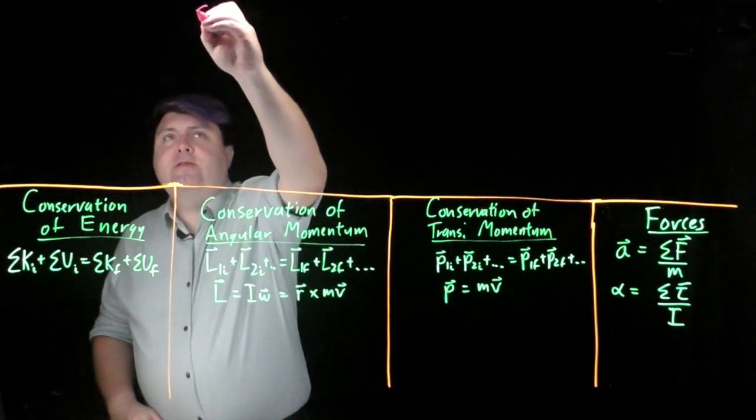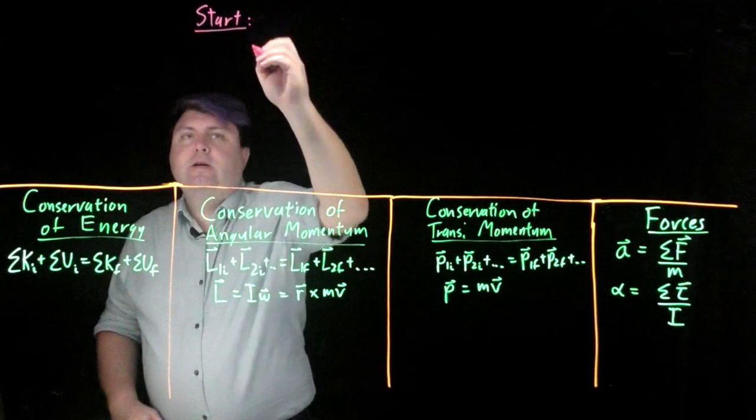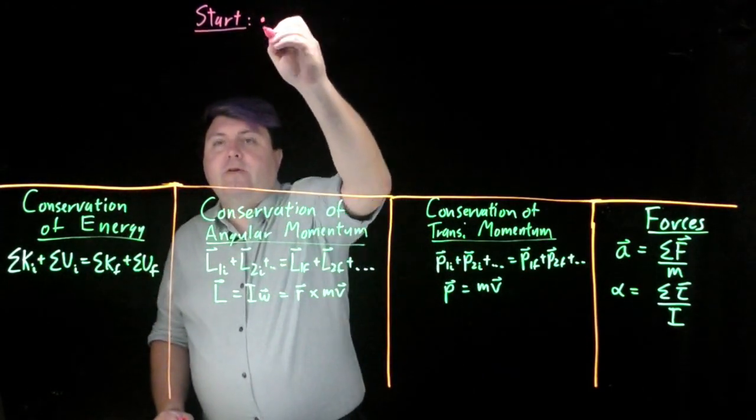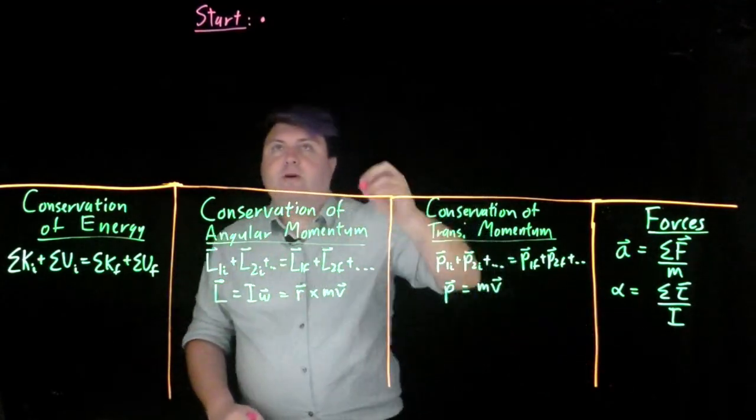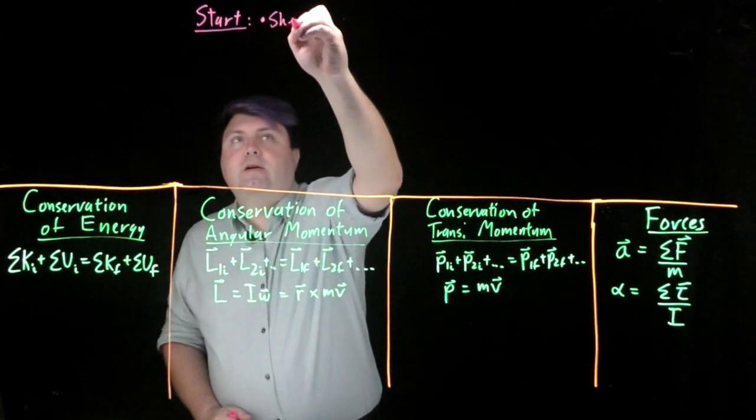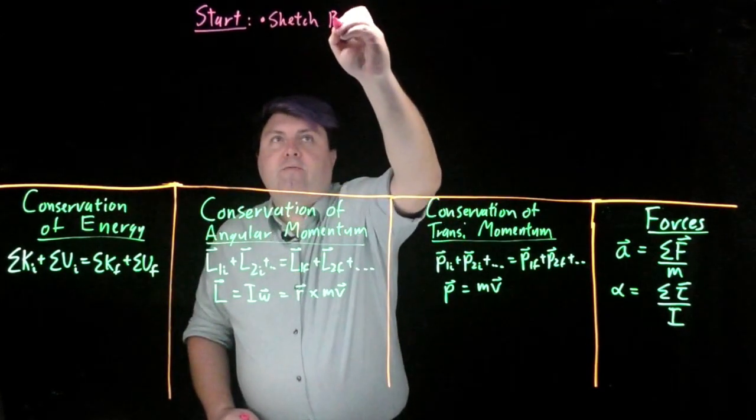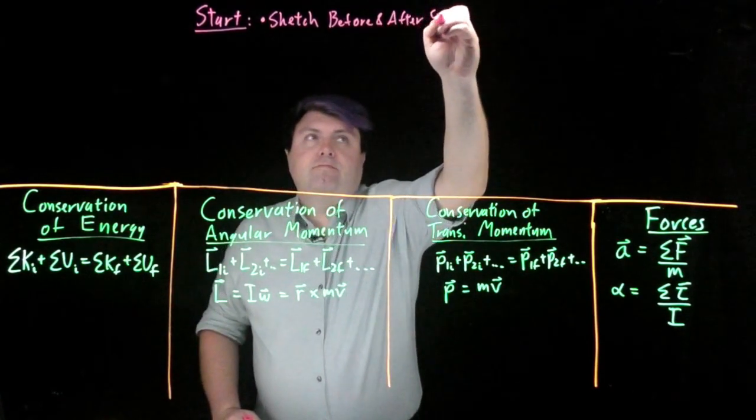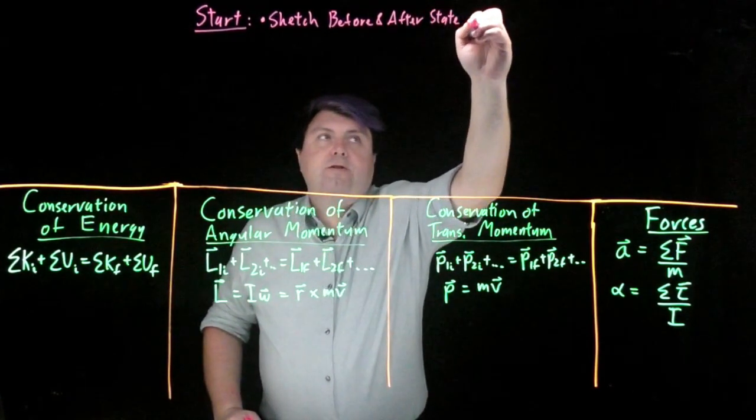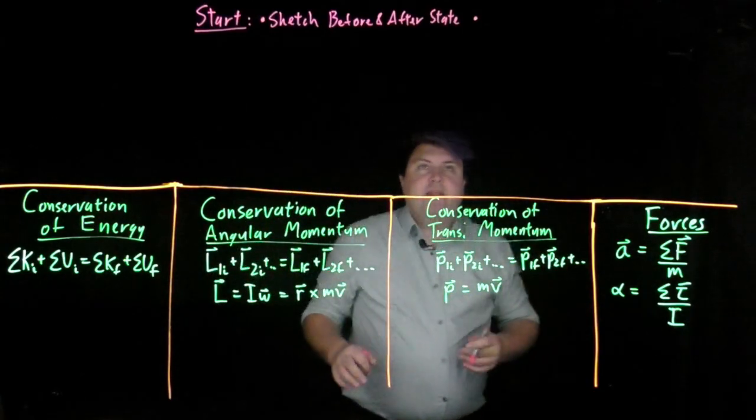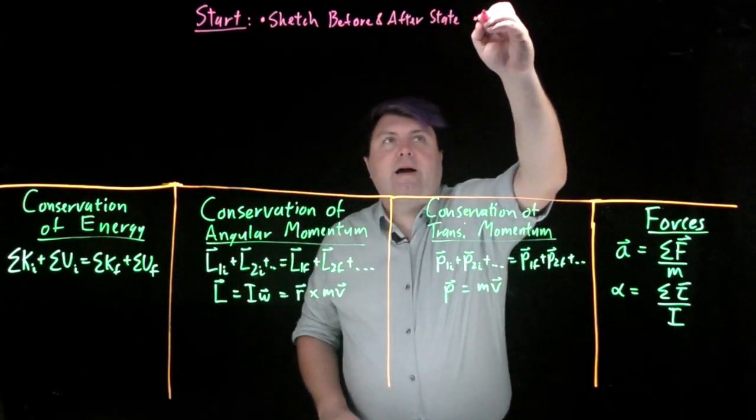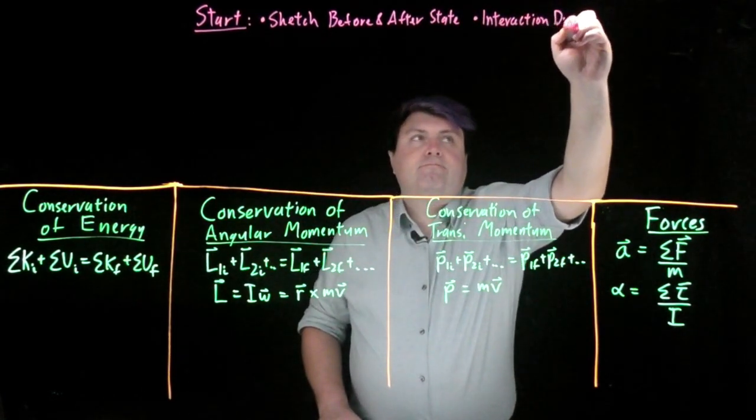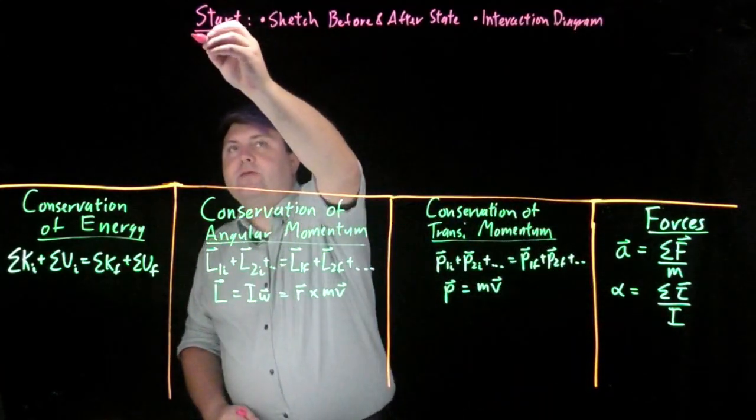So we're going to have a start. And up at this start, what we want you to do is we want you to do all the steps that you normally do when you're approaching a physics problem. We want you to sketch the problem in a before and an after state. If something is not changing, we just have to do a normal state. And then we also want to do an interaction diagram and define our whole system.